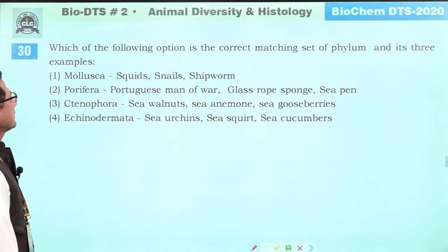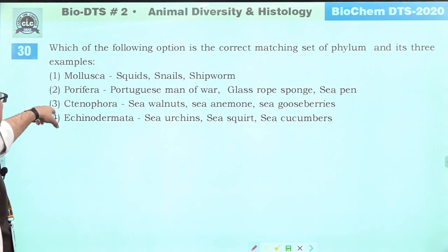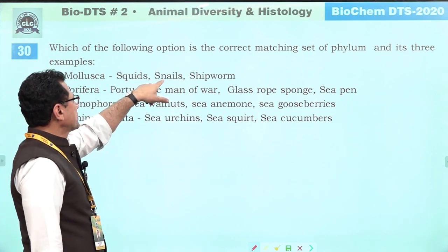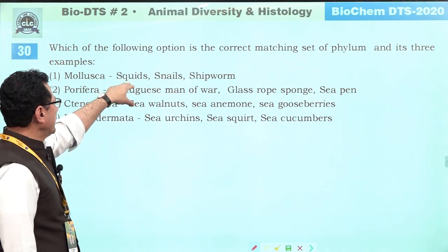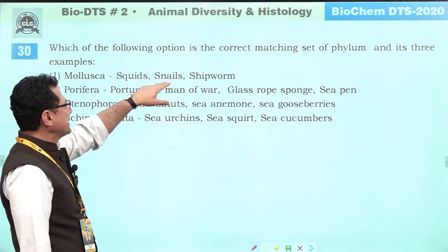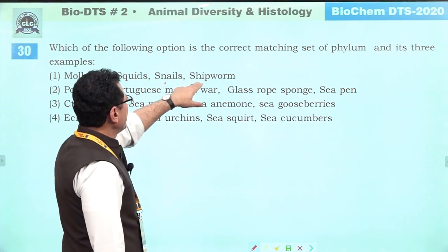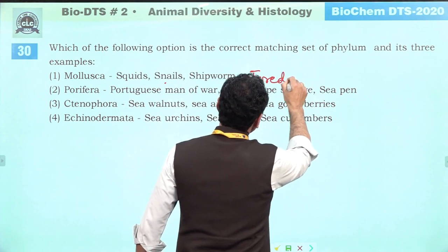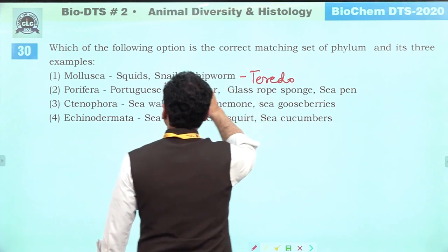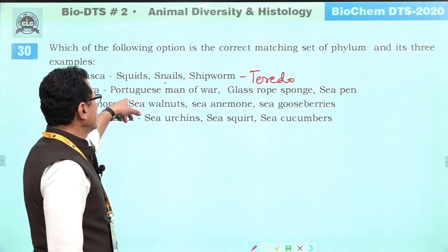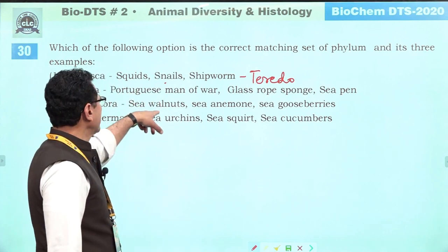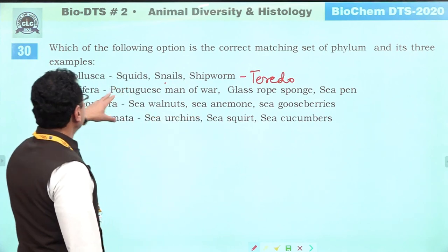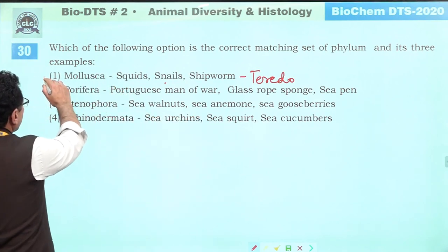Which is the correct matching set? Mollusca includes squids (giant, marine, whale food), snails, and Teredo (shipworm). Portuguese man-of-war is a cnidarian, not Porifera. Sea squirt is not in Echinodermata. All other combinations are incorrect. First option is correct only.